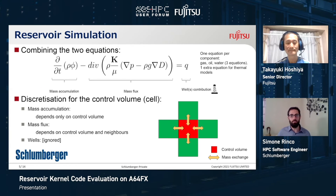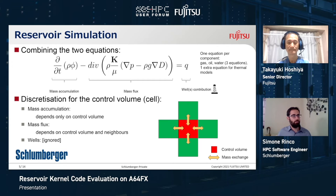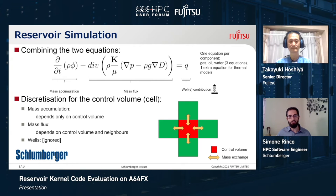In order to solve this mathematical model we combine the two equations and end up with a single equation which we call the balance equation, which is basically the conservation of mass using Darcy's law as a model for the fluid velocity. Typically we need to discretize these equations because they are partial differential equations which are nonlinear. We divide our reservoir into cells — a model can have up to millions or tens of millions of cells — and we need to solve the balance equations in every single cell.